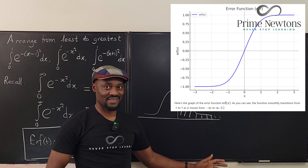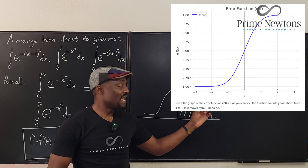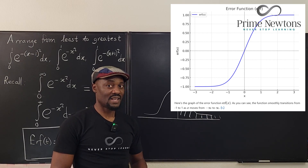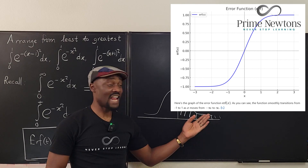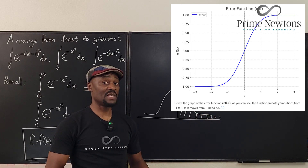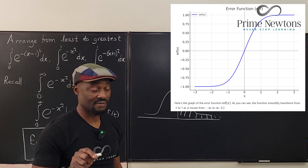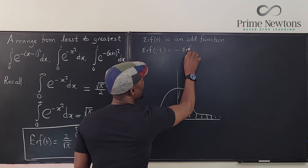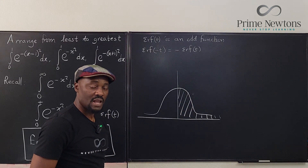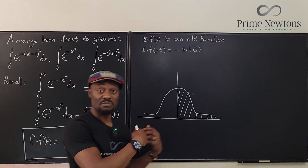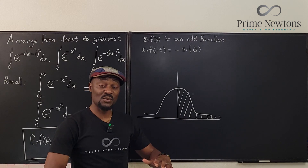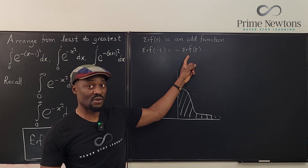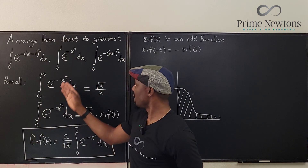This is what the error function looks like. As you can see, it is an odd function: it goes through the origin and has the shape of an odd function. When something is an odd function, it means that the error function of negative t equals negative the error function of t — that's a key property. The domain goes from negative infinity to positive infinity and the range is from minus one to plus one. This is the key idea I need as I continue solving this problem.